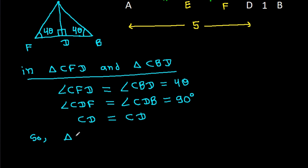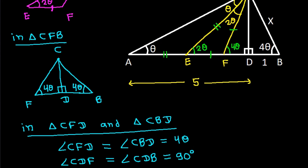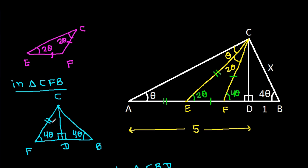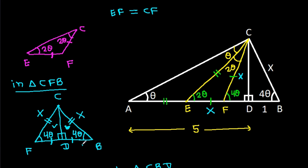So triangle CFD will be congruent to triangle CBD. Hence CF will be equal to CB. And CB is x, so CF will be x. We have EF is equal to CF, so EF will also be x. And again, since the two triangles are congruent, BD will be equal to FD, and BD is 1, so FD will be 1.